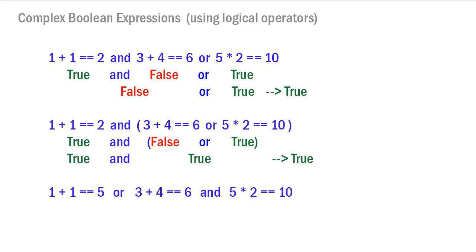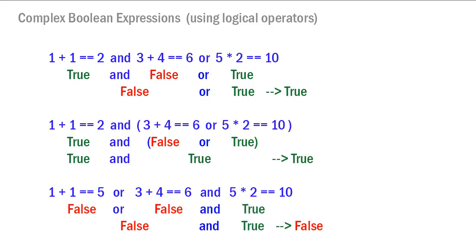Here's another example: '1 plus 1 is equal to 5 or 3 plus 4 is equal to 6 and 5 times 2 is equal to 10'. The first is false, the second is false, and the third is true. Evaluating left to right: false or false is false, then false and true evaluates to false.